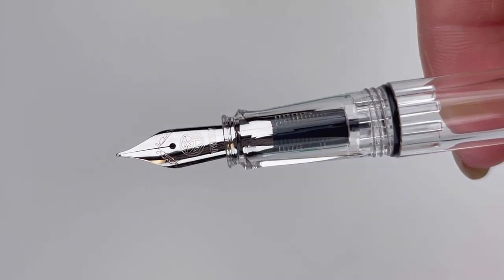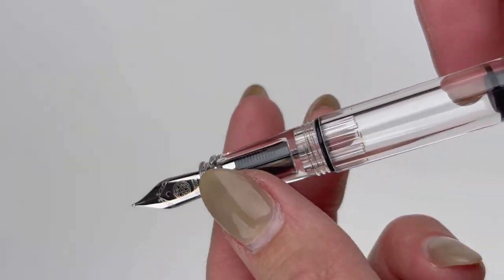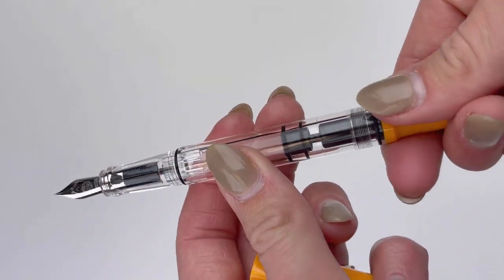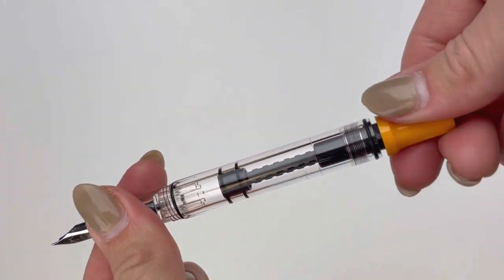It's fitted with a stainless steel TWSBI nib. It's branded there on the nib. And you'll see the fluted pattern there on the section that's actually really comfortable. It's very popular amongst writers.